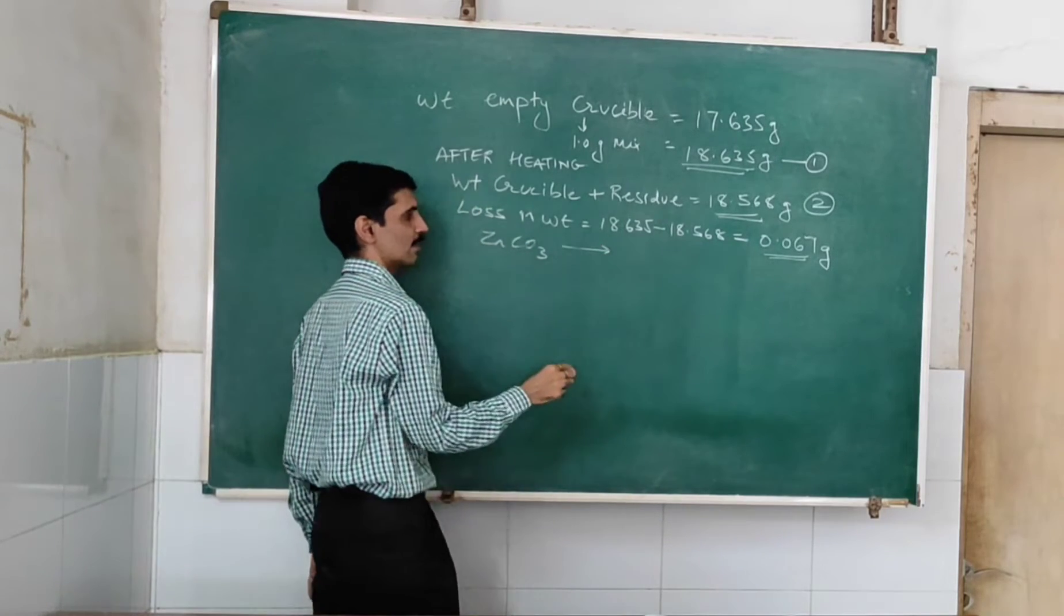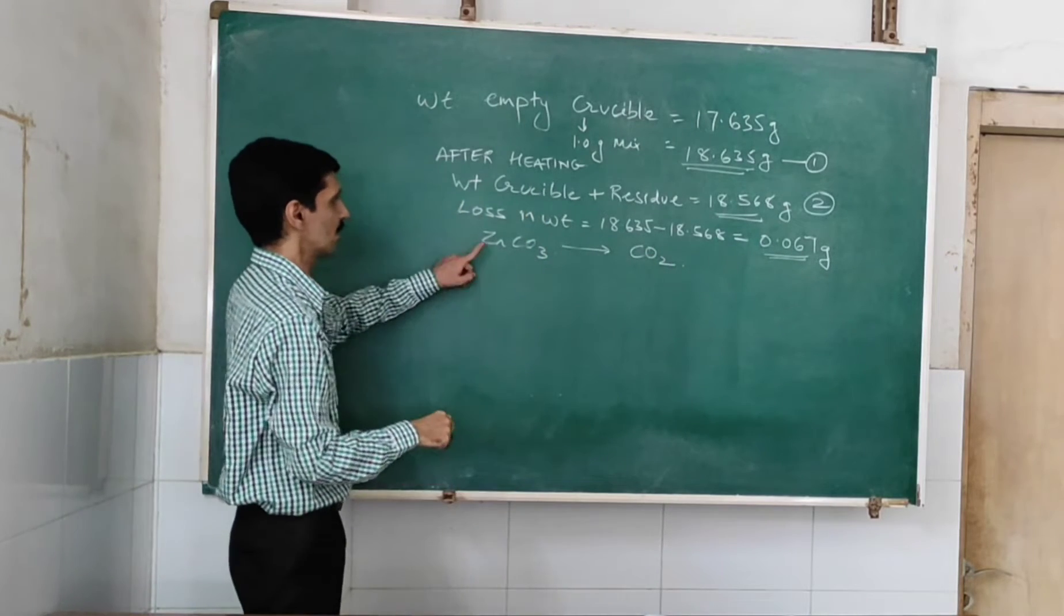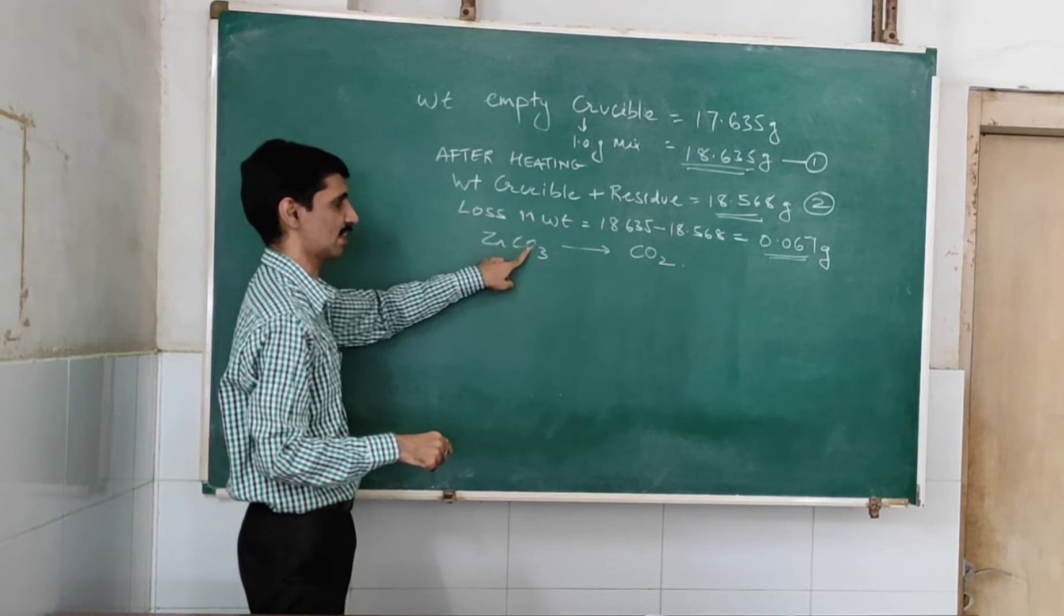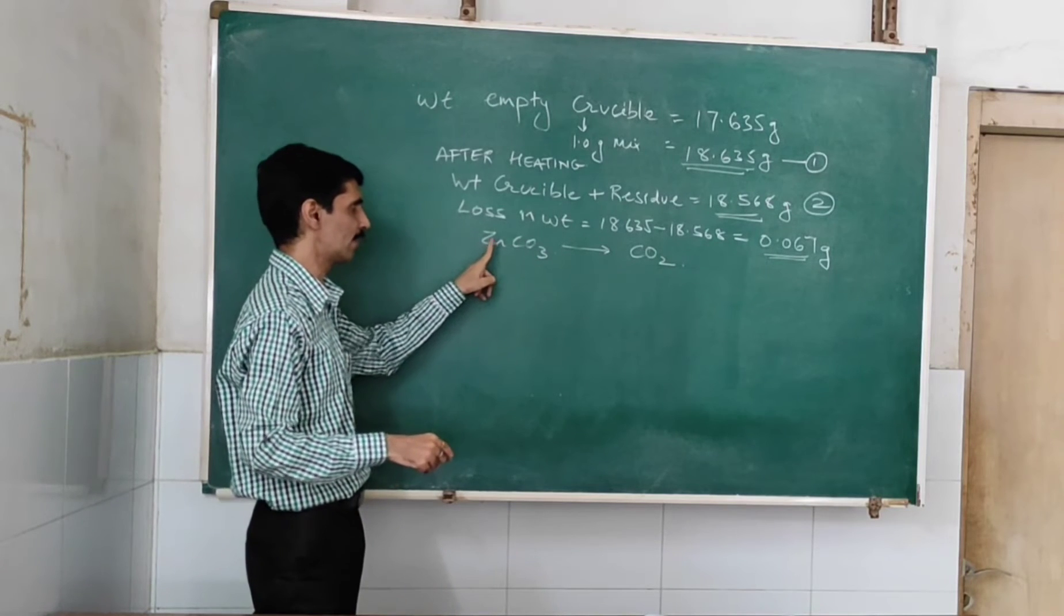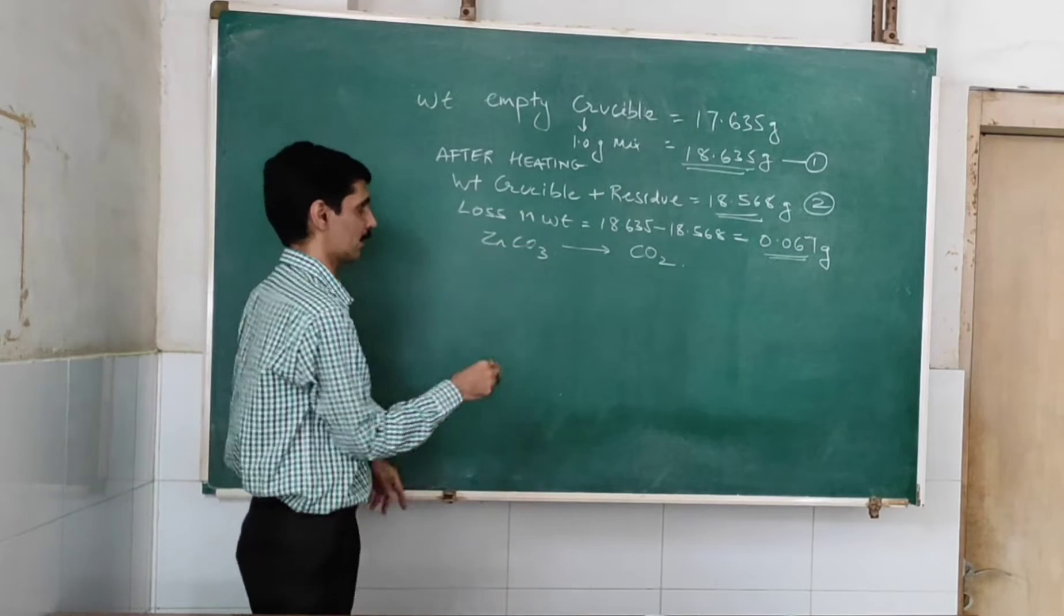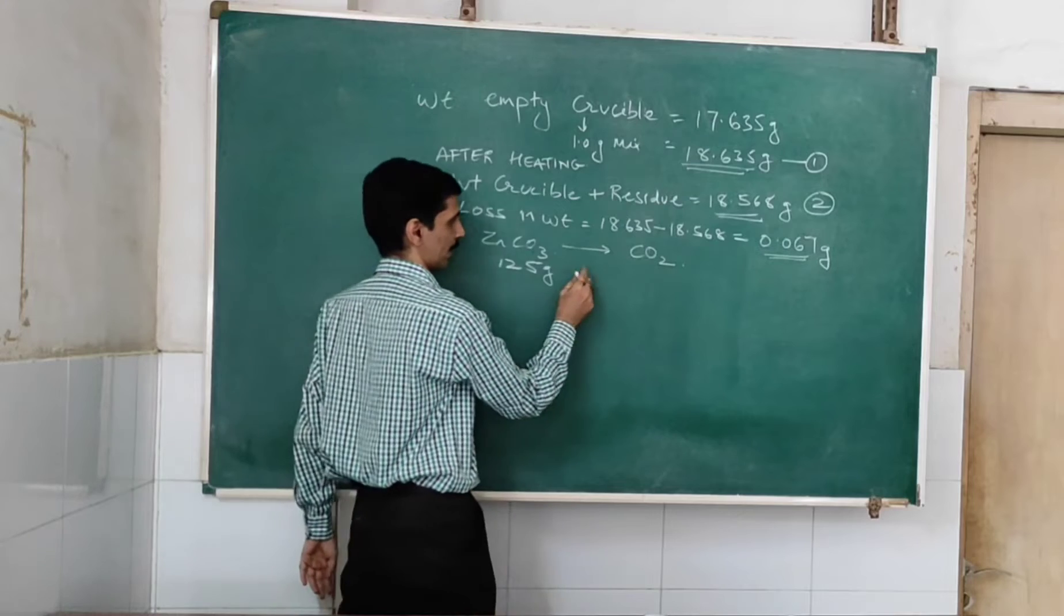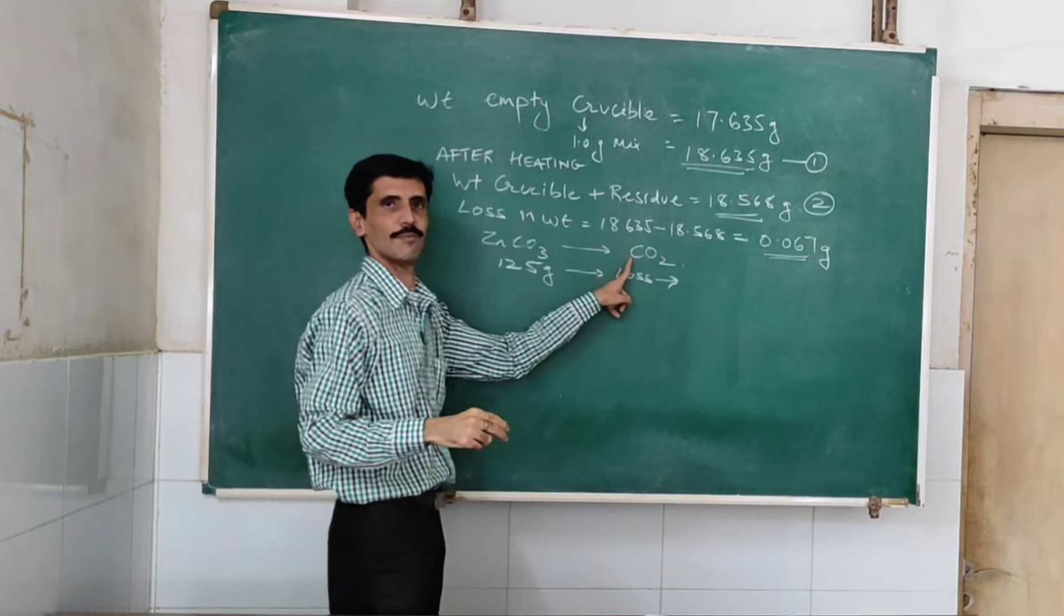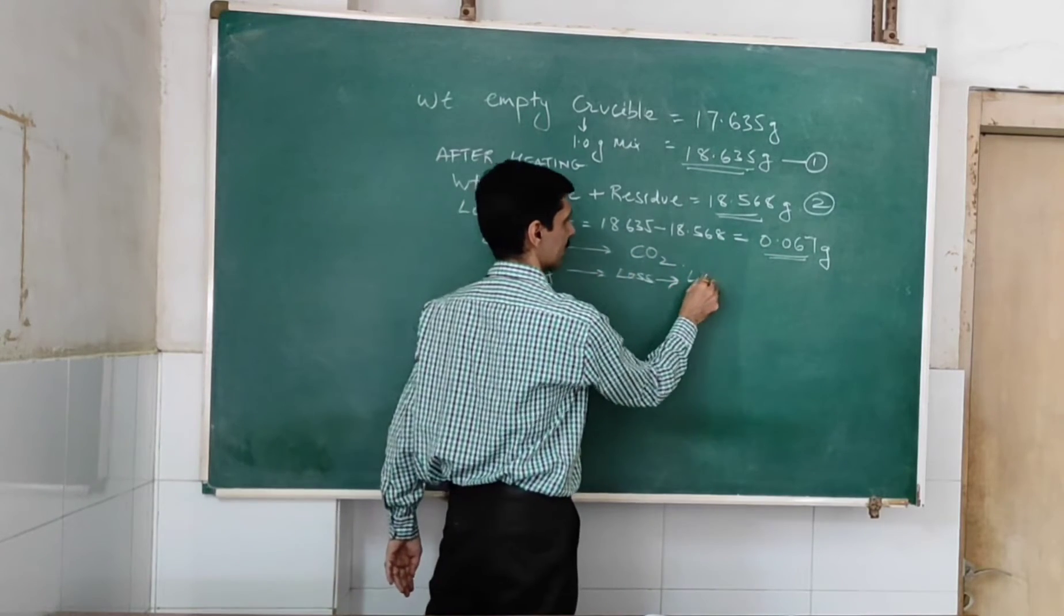So we will use some molecular weights now. Zinc is 65, carbon is 12, and oxygen is 16 each. So 16 each means 48. So 65 plus 12 is 77, plus 48 gives you 125. So 125 grams of zinc carbonate corresponds to a loss of carbon is 12, oxygen is 16 each. So 16, 16 is 32, and 12 is 44 grams.